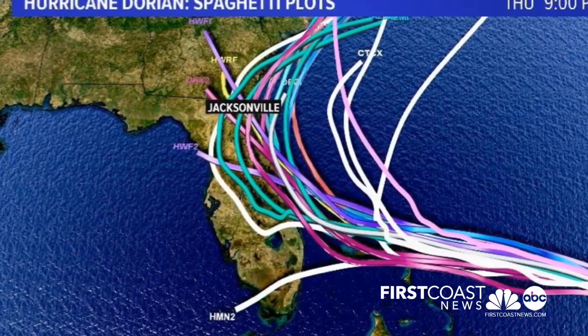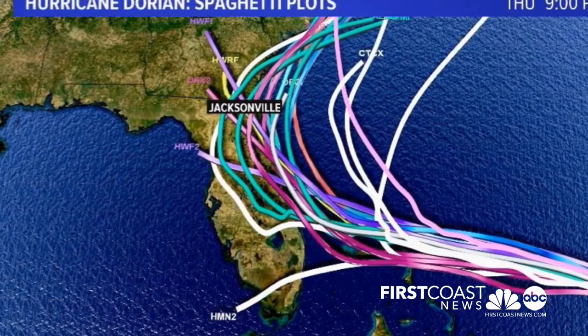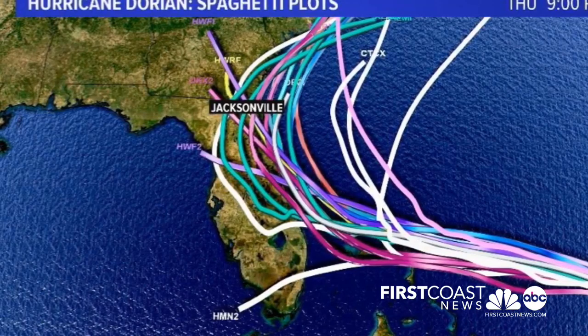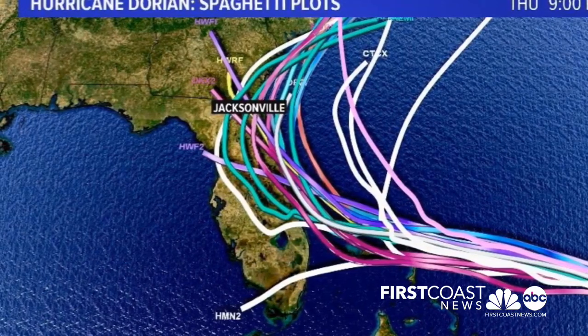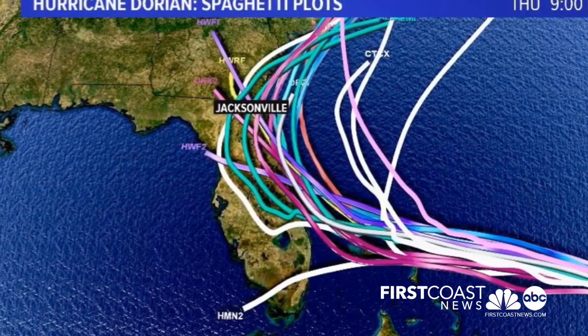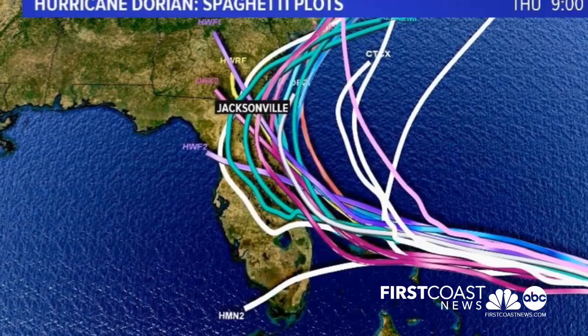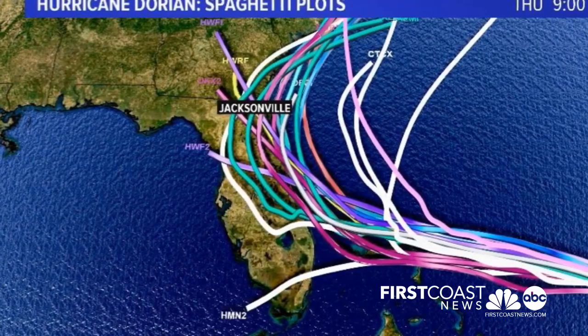So just know if you're looking at a spaghetti model and a plot, it's not showing you any other impact or anything outside of just the future location of that exact center. While I love spaghetti, I don't necessarily like spaghetti plots because they don't include all the impacts, but they give us a good indication of where the center of the exact storm may be going.